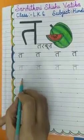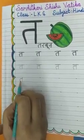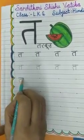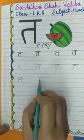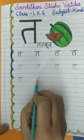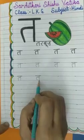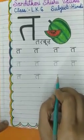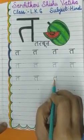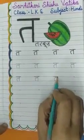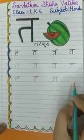T. Tarbooz. Again, standing line. Like this. T. Tarbooz. Again, standing line. Slipping line. Now, turn it. And slipping line. T. Tarbooz. Again, standing. T. Tarbooz.